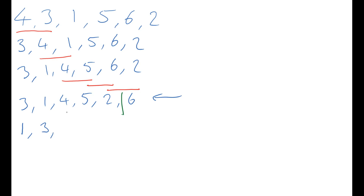I've now got the four in my head. I'm comparing the four and the five — I'm going to write the smaller one down and keep the larger one in my head, in this case the five. I'm now comparing the five with the fifth number, which is a two. Write the smaller one down — that's the two. And I've reached the end of my list, remembering that I'm not doing anything with the six at the end. So I'm going to write down the five, and there's the six at the end.